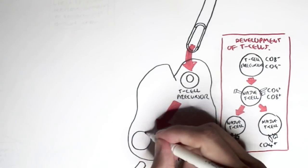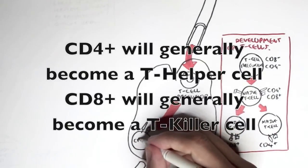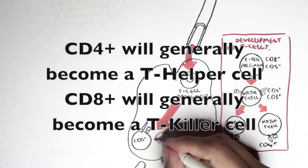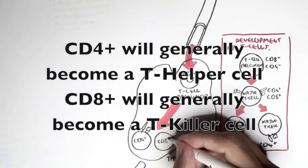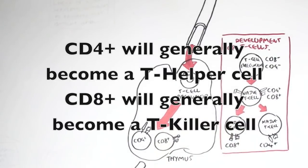And so in the thymus, we saw that a T cell precursor will give rise to either a CD8 naive T cell or a CD4 naive T cell. Now let's look at the immunology map and see how this T cell development occurs in a bit more detail.